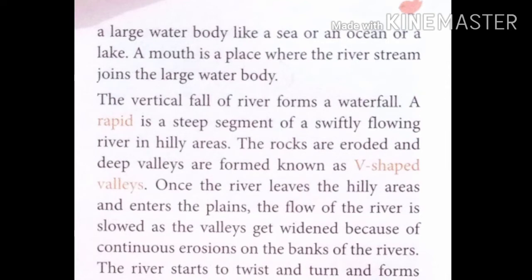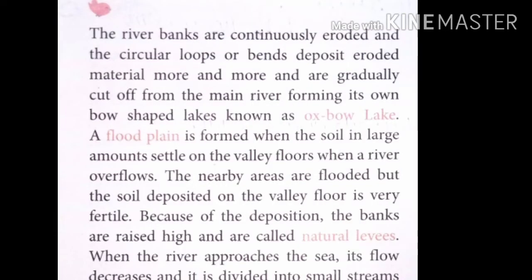the river starts to twist and turn and forms meanders — huge bends or loops. The river banks are continuously eroded. The circular loops or bends deposit eroded material more and more and are gradually cut off from the main river. This cut-off circular loop is called an oxbow lake because of its bow shape.